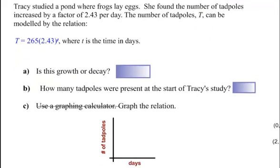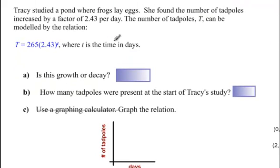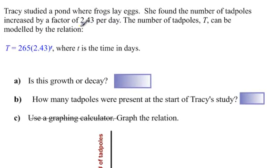Okay, so this is a question about Tracy. She studied a pond where frogs lay eggs. She found the number of tadpoles increased by a factor of 2.43 every day. That is growth, obviously. The number of tadpoles, T, can be modeled by this relation. And they just gave us this relation. So this is how you do it. Let's go through these questions.